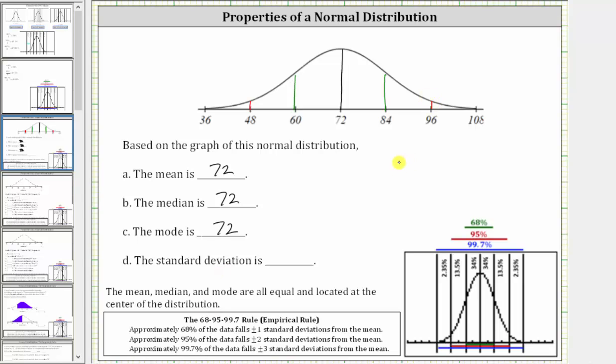And then finally, approximately 99.7% of the data falls plus or minus three standard deviations from the mean, which for our graph is from 36 to 108.